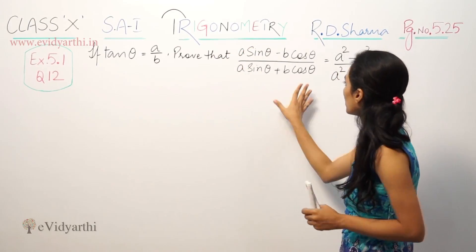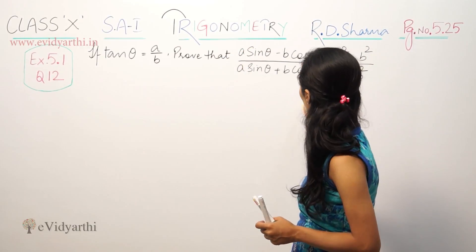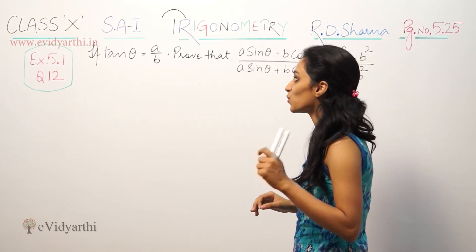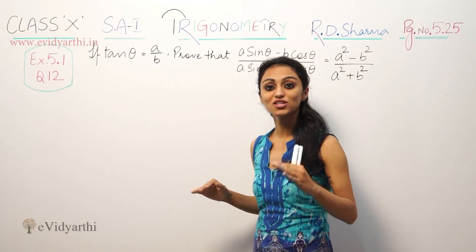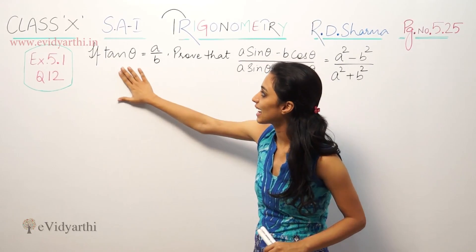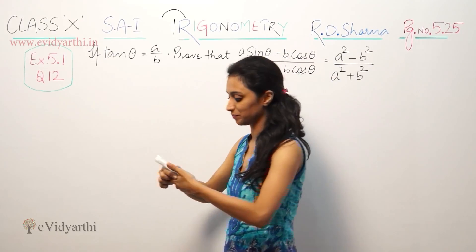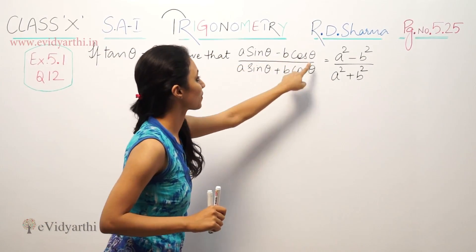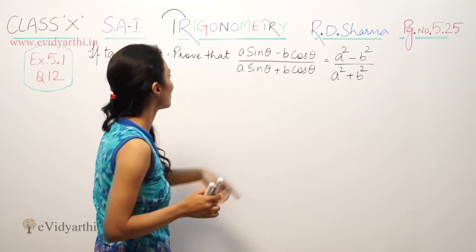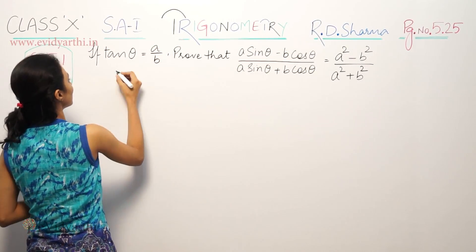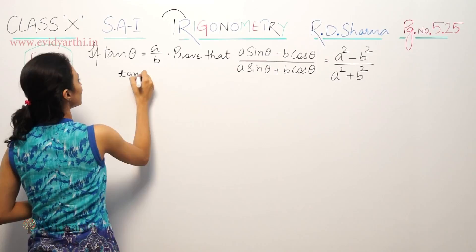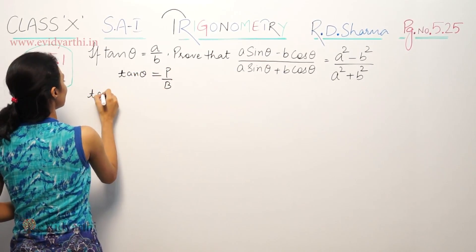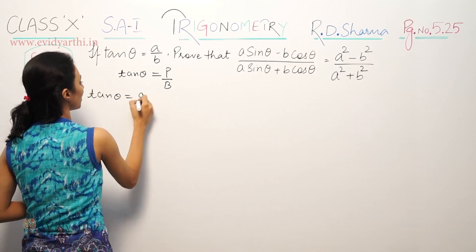We will take this expression and evaluate it. First of all, we need to use the given condition. We are given that tan theta is equal to a by b.